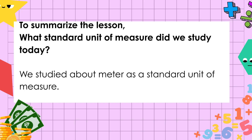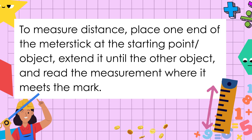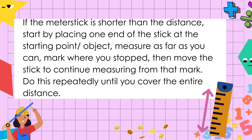To summarize the lesson: what standard unit of measure did we study today? We studied meter as a standard unit of measure. How do you measure the distance using a meter stake? Place one end of the meter stake at the starting point or object, extend it until the other object, and read the measurement where it meets the mark. If the meter stake is shorter than the distance, place one end at the starting point, measure as far as you can, mark where you stop, then move the stake to continue measuring from that mark. Do this repeatedly until you cover the entire distance.